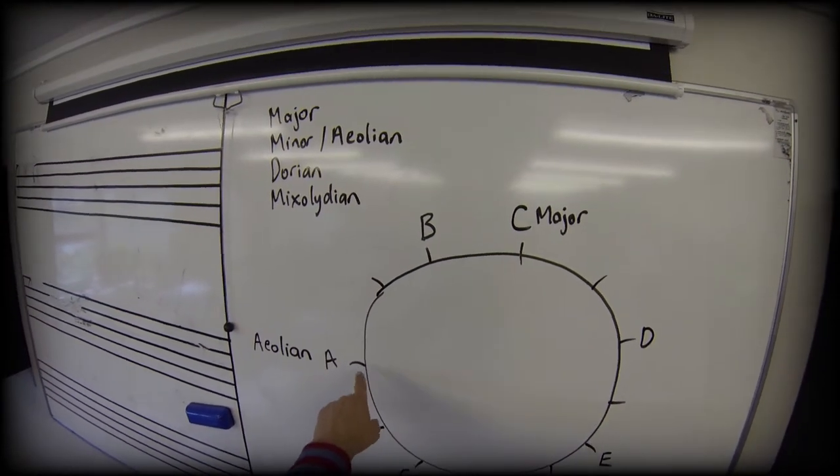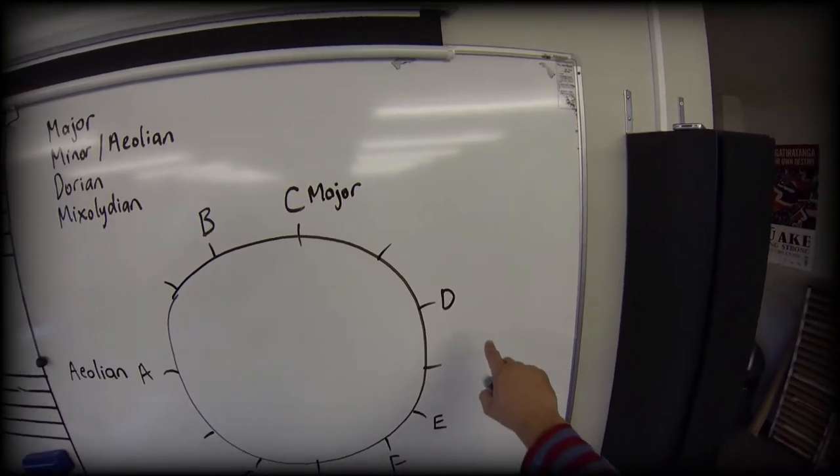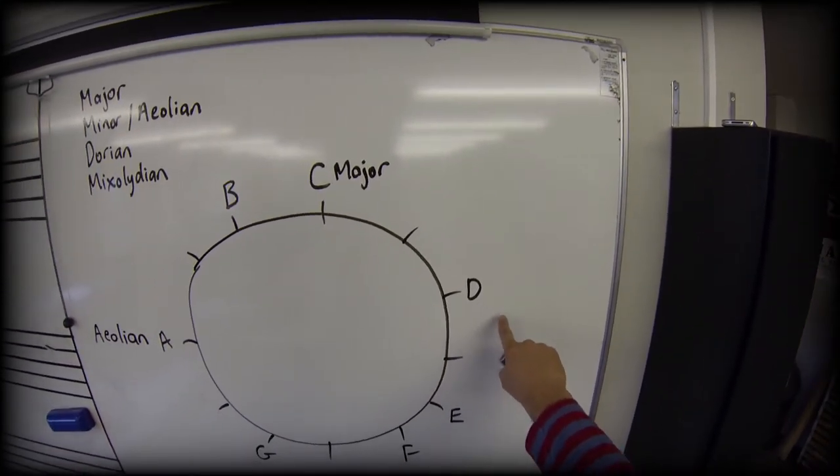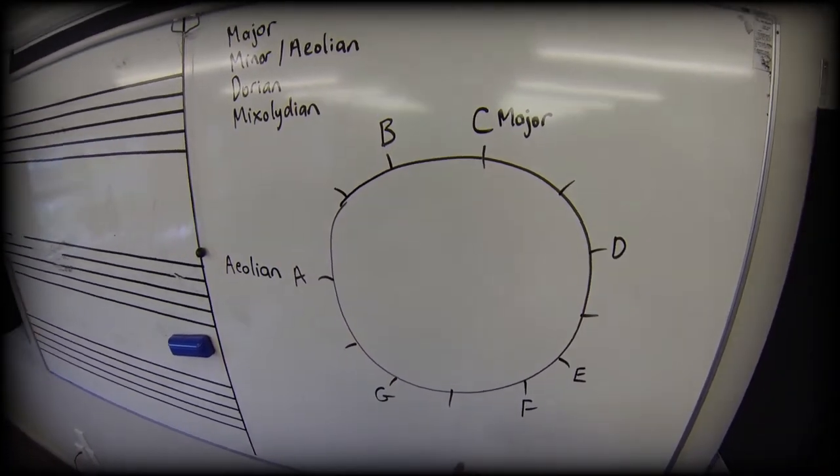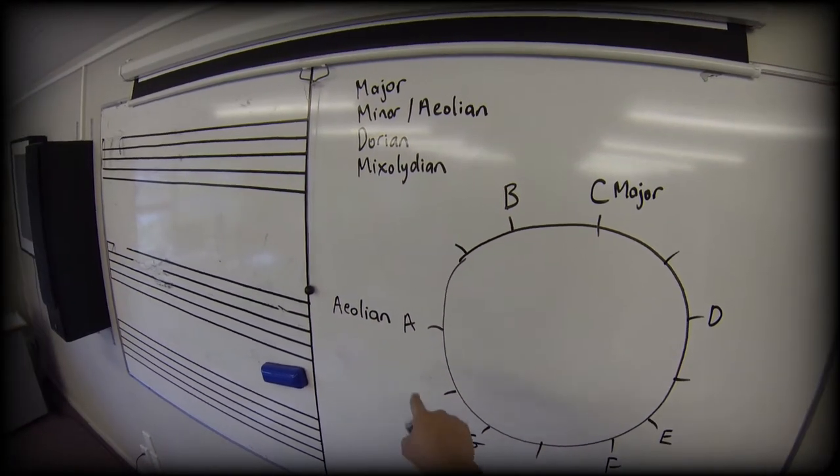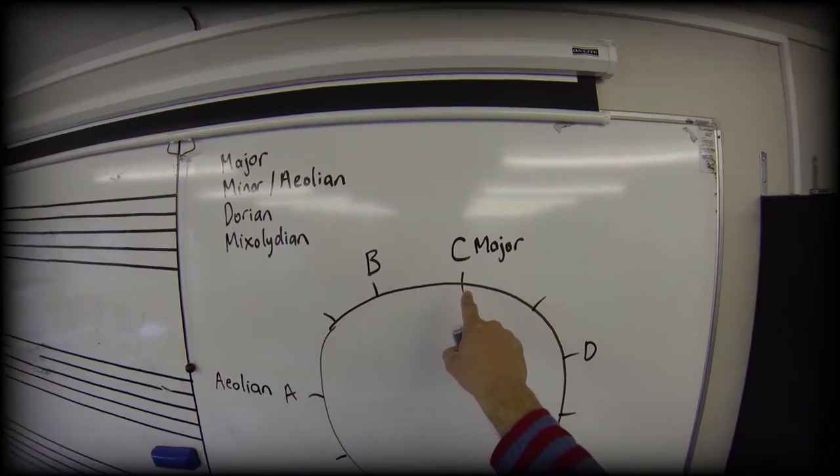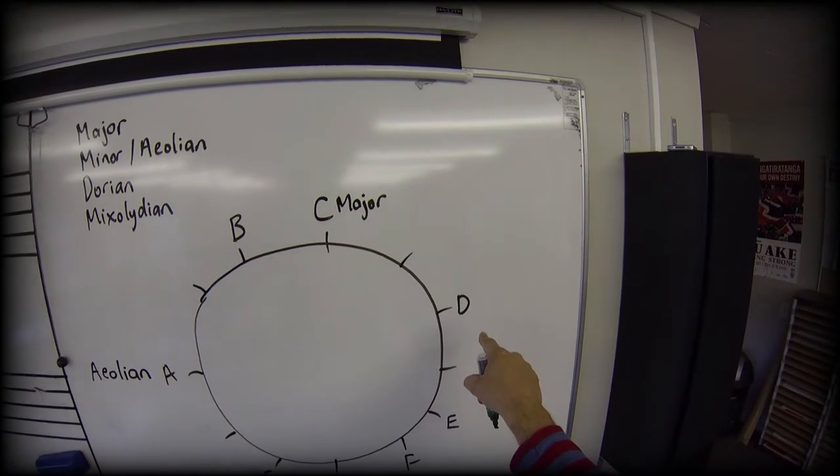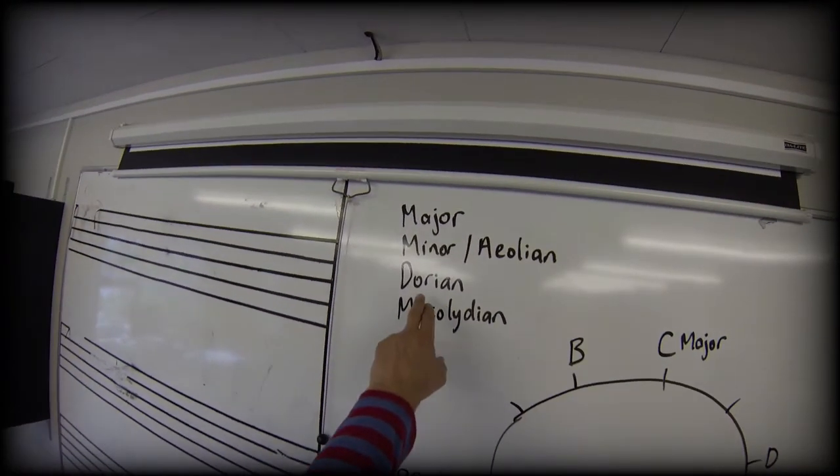We'll go D, two to the E, one to the F, two to the G, two to the A, two to the B, one to the C, and two to the D. That makes the sound of the dorian mode.